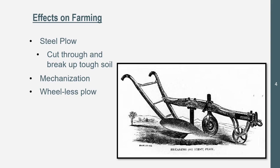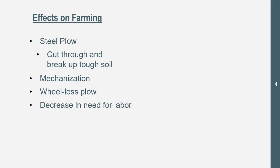Then we got the wheelless plow — yes, it does have wheels on it, I know. It's also sometimes called the breaking plow. This allowed animals to just plow through land, and it's similar to but not the same as the steel plow. We saw a decrease in need for labor with this mechanization and innovations like the steel plow and wheelless plow. We didn't need as many people on the farms, which made the cost of production cheaper, so they could spend that money on buying more land, seeds, soil, and more innovations. And then it kind of goes back into a cycle.